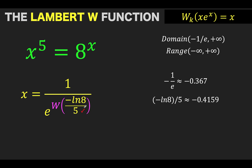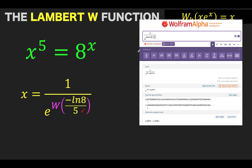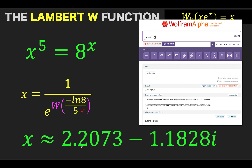Using Wolfram Alpha, here is the complex solution to this seemingly simple exponential equation. The value of x is approximately 2.2073 minus 1.1828i — where 2.2073 is the real part and 1.1828 is the imaginary part. The Lambert W function is a very useful tool when dealing with exponential functions, with many applications in physics and number theory. Thank you very much — this is Lando Assistant, and we hope to see you again in our next video.